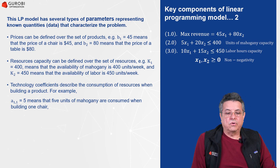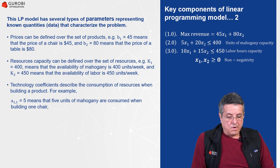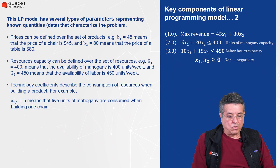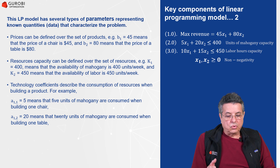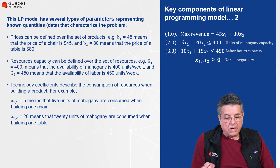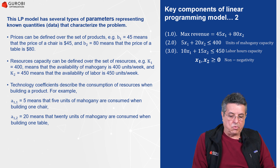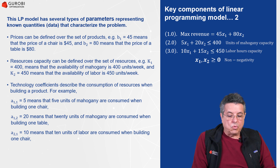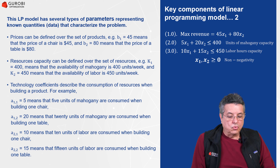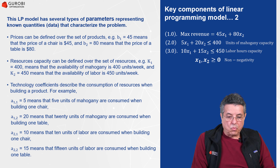For this furniture problem: A11 equals 5, meaning five units of Mahogany are consumed when we build one chair. A12 equals 20, meaning 20 units of Mahogany are consumed when we build one table. A21 equals 10, meaning 10 units of labor are consumed when building one chair. And A22 equals 15, meaning 15 units of labor are consumed when building one table. Note: the first index refers to resources and the second to products.